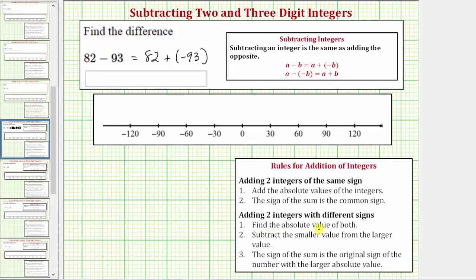So step one, we find the absolute value of both integers. So we need to find the absolute value of positive 82 and the absolute value of negative 93.